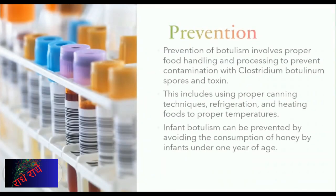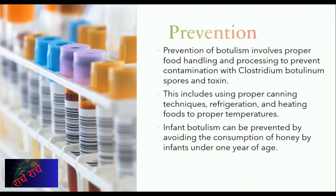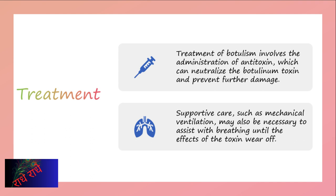In order to prevent botulism, food handling and processing must be conducted properly to avoid Clostridium botulinum contamination. This necessitates employing the correct canning techniques, keeping food chilled, and ensuring it is cooked to the appropriate temperature. Additionally, honey should not be given to babies younger than one year old. Anti-toxin is capable of neutralizing the toxin and preventing further damage, and supportive care such as artificial ventilation may be required to help with breathing until the toxin wears off.